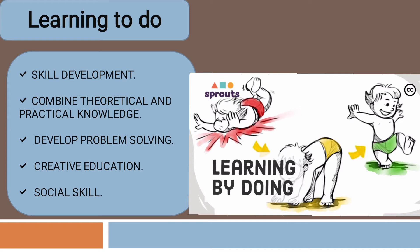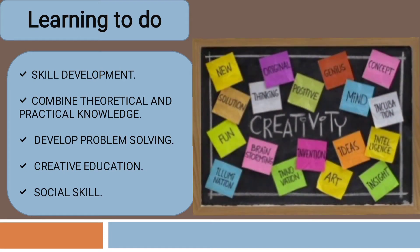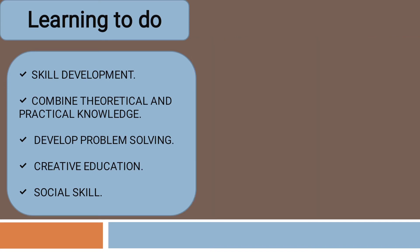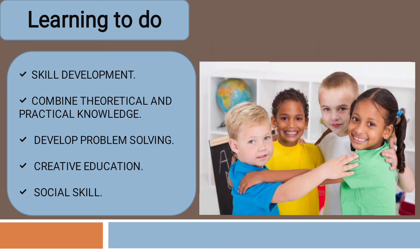The next one is creative education — that the child needs to be able to make education open for everyone. Every activity should be done in the right way. The next is social skills, which is part of our learning to do.